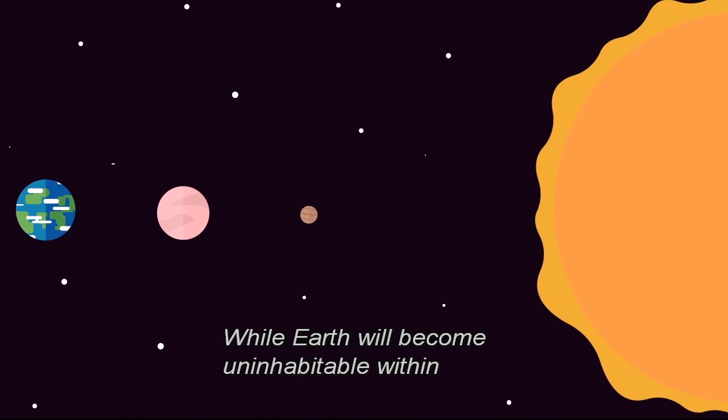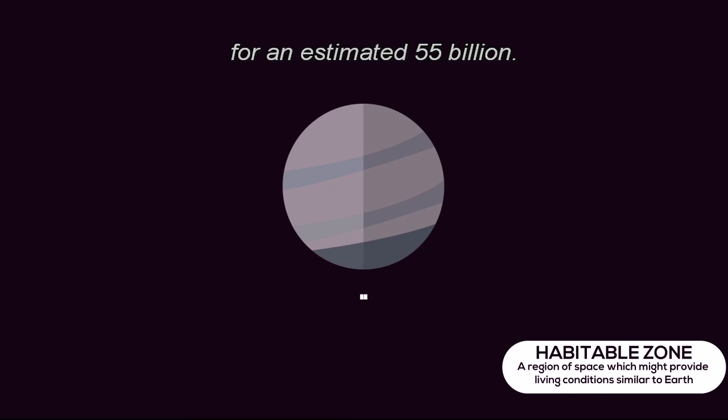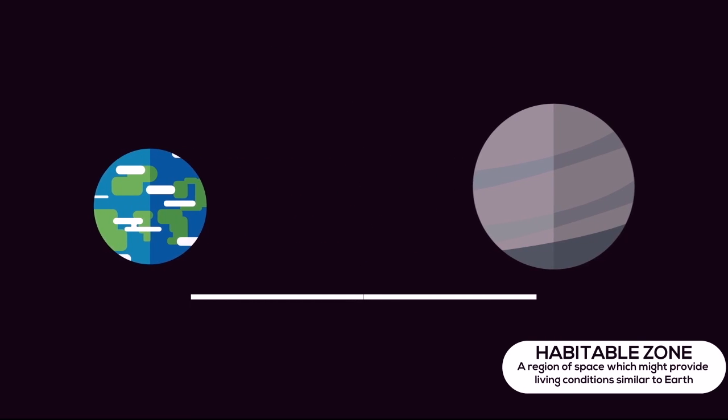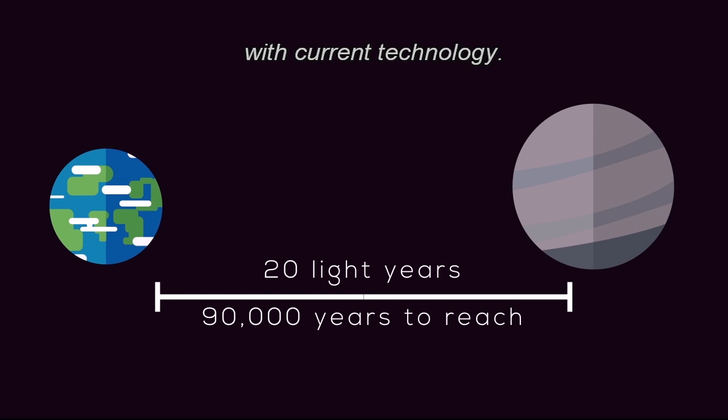While Earth will become uninhabitable within the next 3 billion years due to the sun expanding, Gliese will stay in its habitable zone for an estimated 55 billion. This planet is still 20 light years away, however, so it could take 90,000 years to reach with current technology.